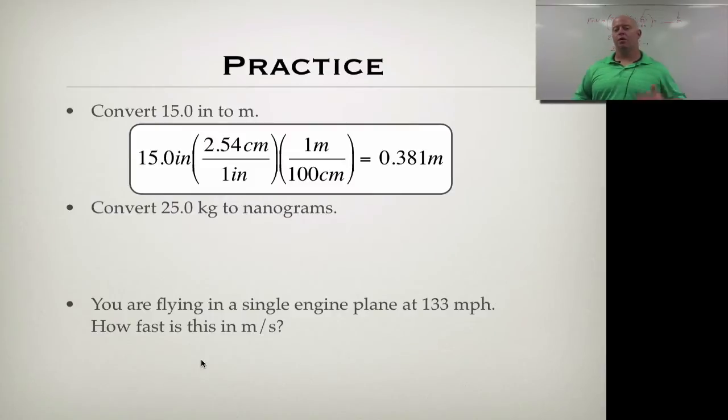This process can be repeated over and over and over again for any of our conversions. Whether they be simple ones, whether they be more complex ones, whatever it is. So the next one down, convert 25 kilograms to nanograms. So in this problem, we have kilograms and nanograms. Now, they're both in the same SI system, but it may take us a couple steps to get through it. So let's take a look and see how that one works out.